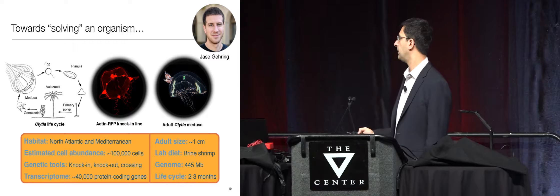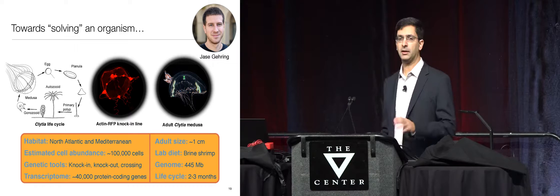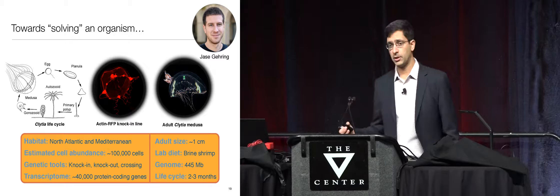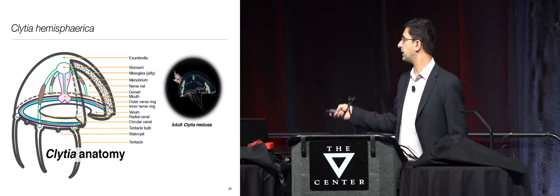It has a complicated life cycle, just to say it's fairly simple overall. Its genome is also about 400 million base pairs — about one-sixth or one-seventh the size of the human genome. This work has been carried out by a postdoc in my lab, Jace Gehring, who's a molecular biologist.